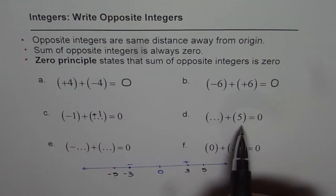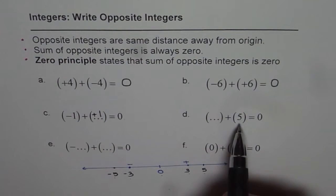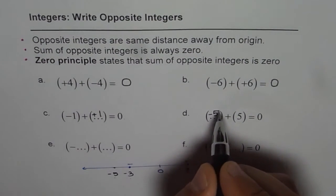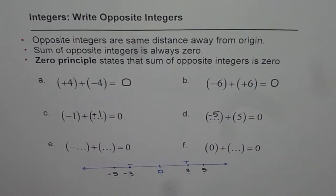Now how about something plus 5 equals to 0? That something should be what? That something should be opposite integer of 5, and the integer is minus 5. So minus 5 is opposite integer of 5. When you add them up you get 0. That is how we answer these questions.